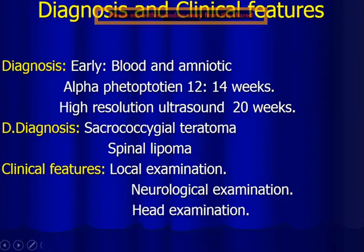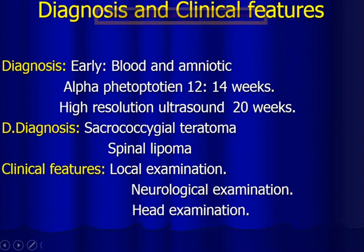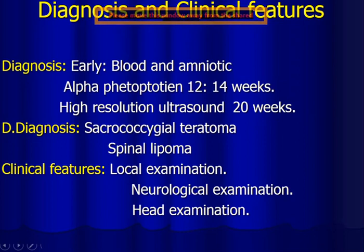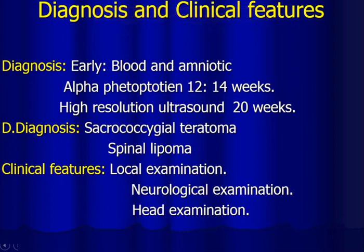Diagnosis of spina bifida can be done antenatally by analysis of blood and amniotic fluid from the mother, looking for alpha-fetoprotein at 12 to 14 weeks. Or we can diagnose it by high-resolution ultrasound at 20 weeks of gestation. The differential diagnosis includes sacrococcygeal teratoma or spinal lipoma.